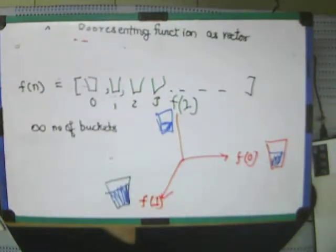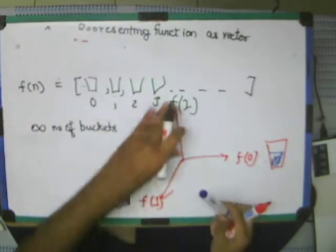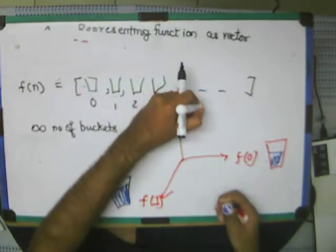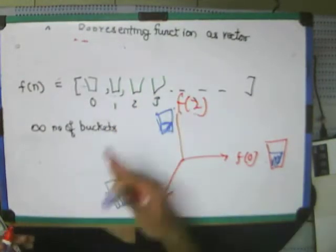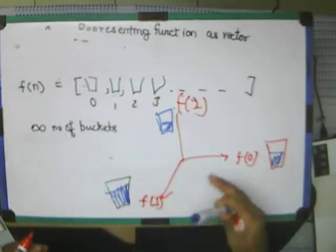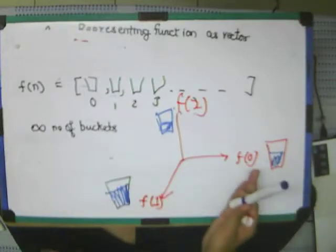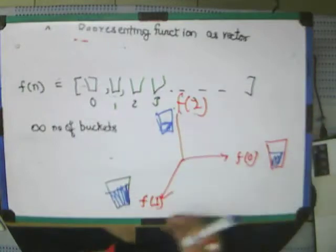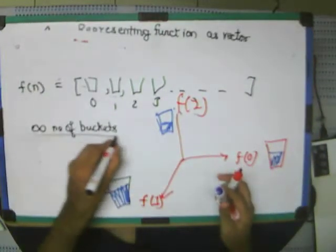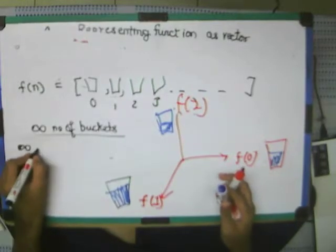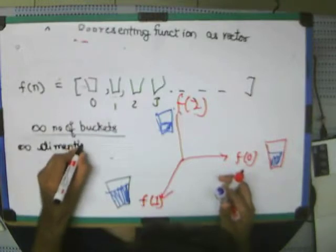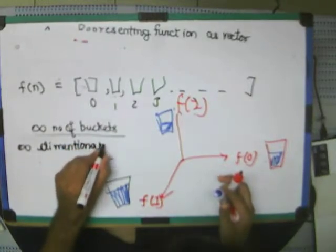In that sense, what I am trying to say, this is F of 2. So in that sense, there are infinite such buckets which contain different different values. And each bucket, just see, are orthogonal to each other. So in that sense, there are infinite number of buckets and so therefore, infinite dimensional vector.